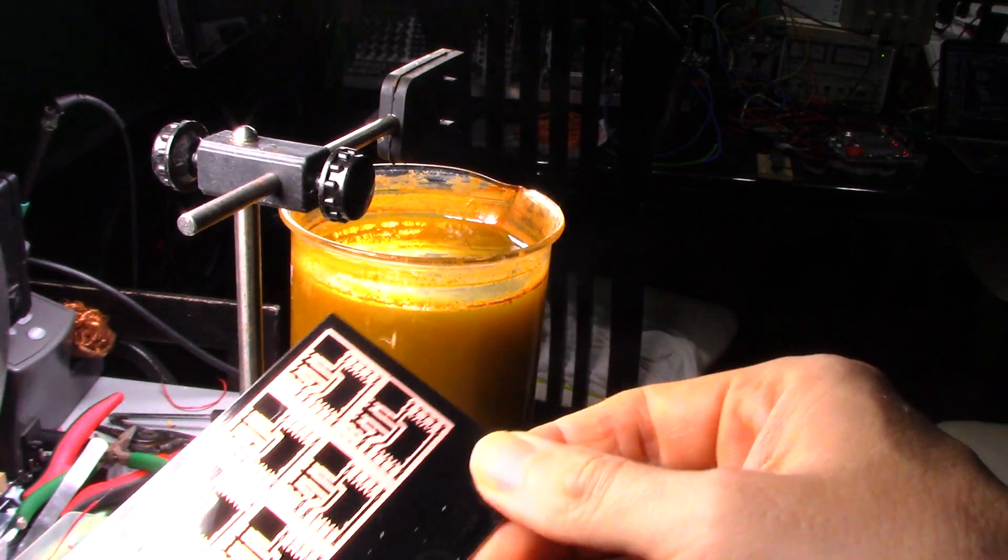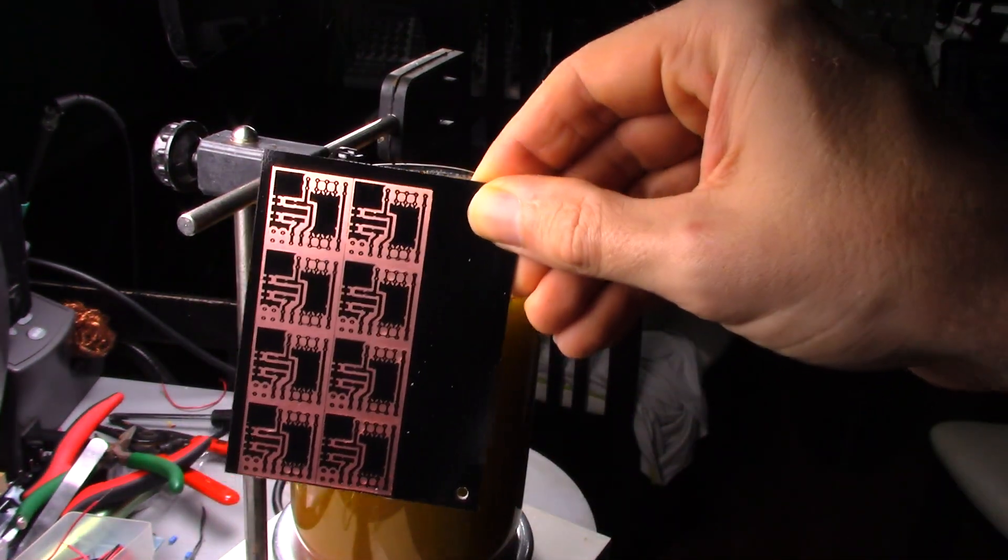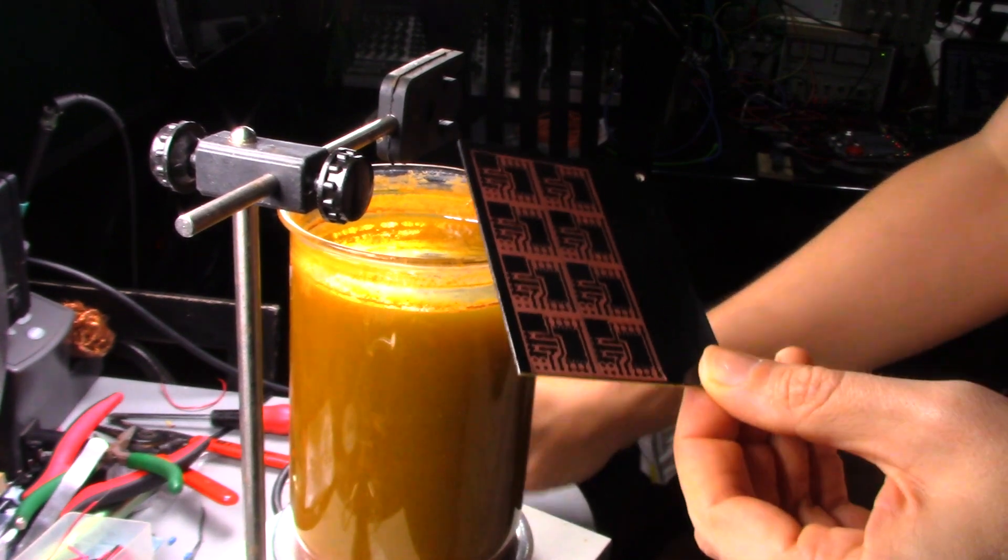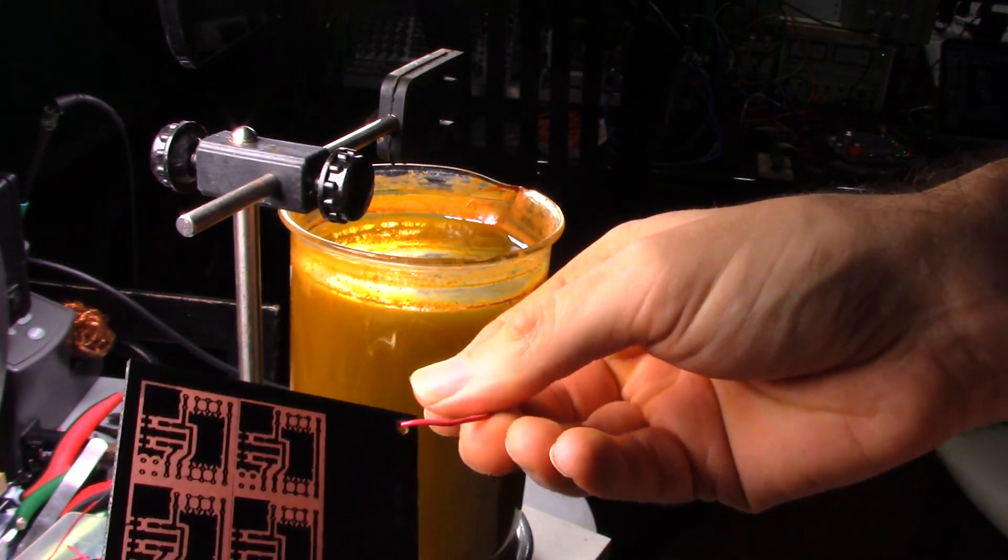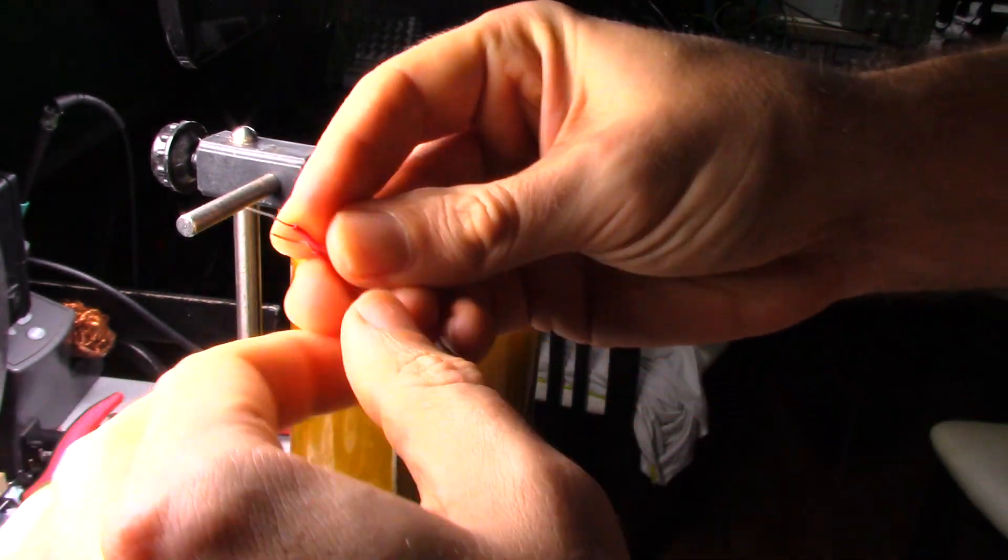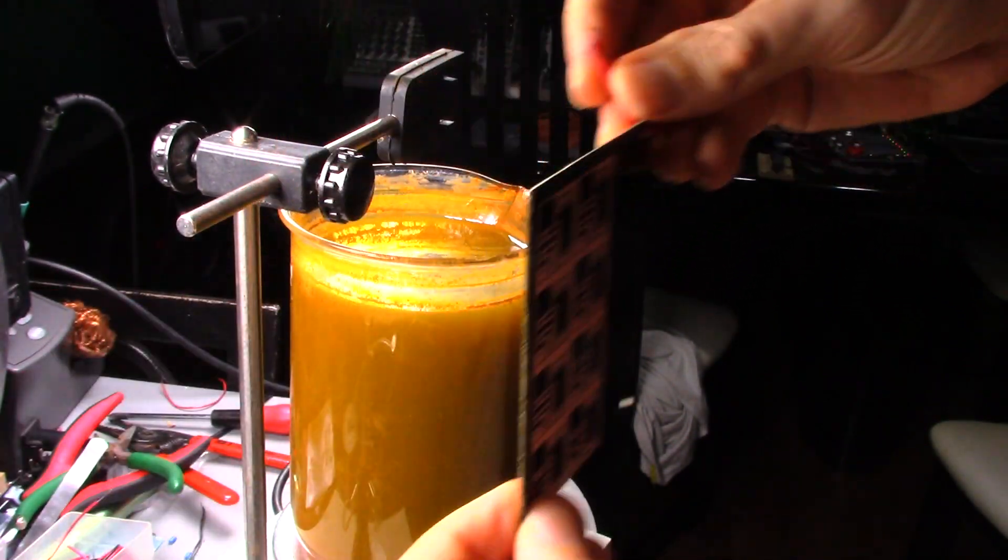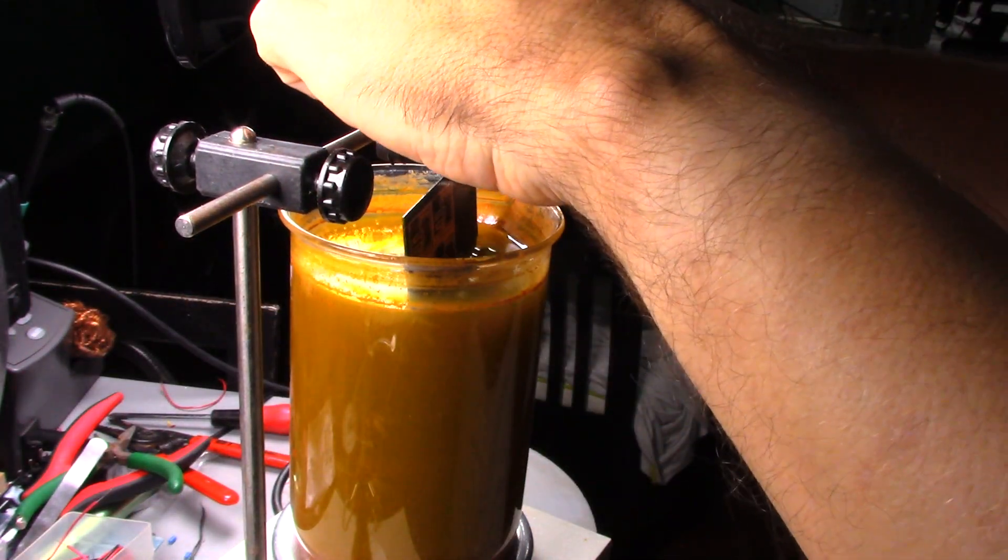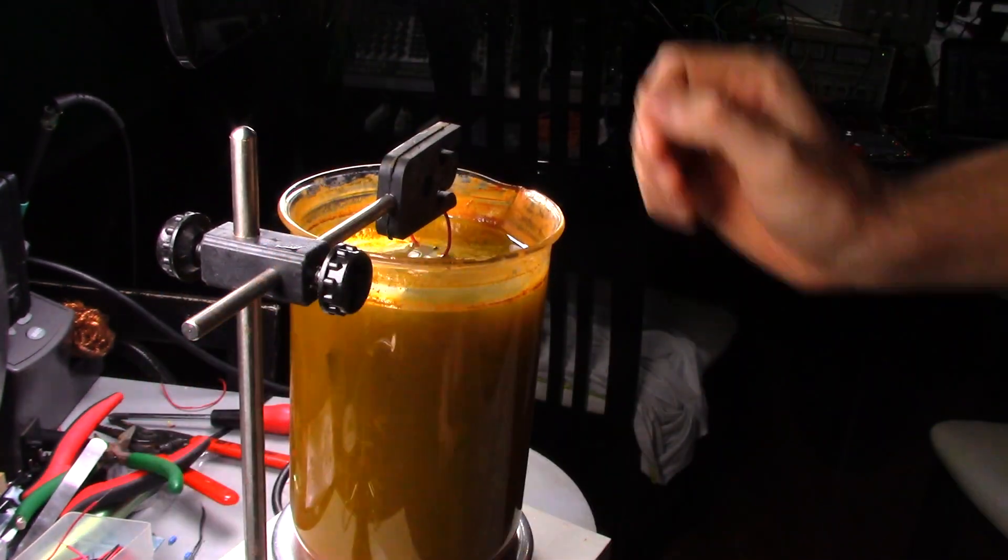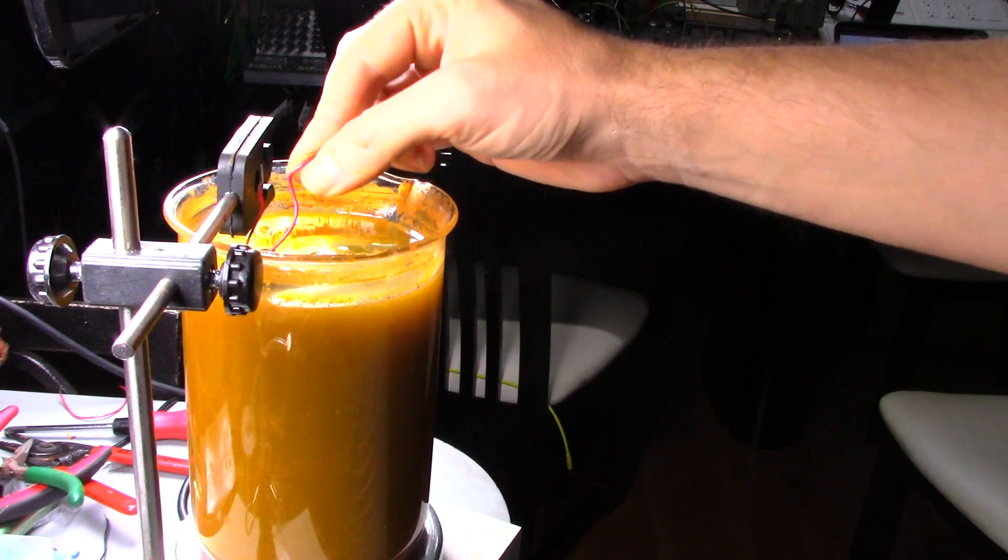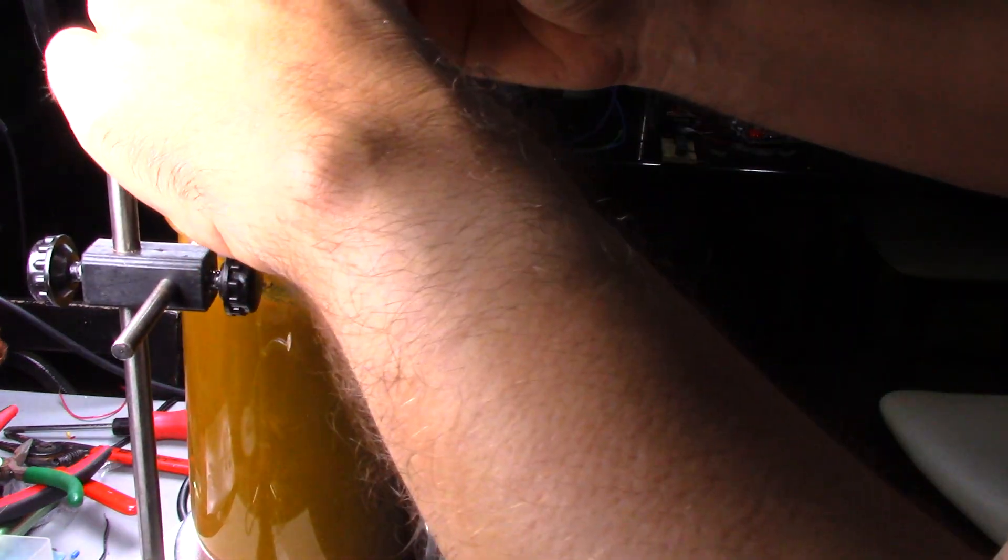Now with the tarnish removed, into the ferric chloride they go. And just a few minutes later, perfectly etched PCBs.